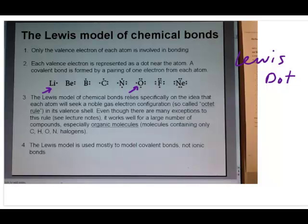For example, here we're going through the second period elements, which is really the best set of elements where the Lewis model works. Lithium is group 1A, so it only has one valence electron. You can work this out using electron configuration as well. Beryllium has two valence electrons, it's group 2A.